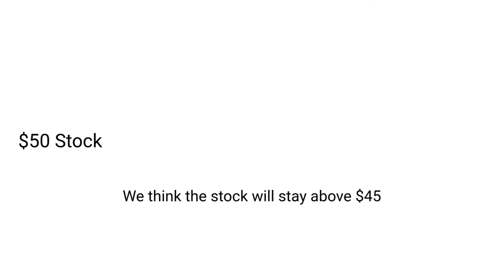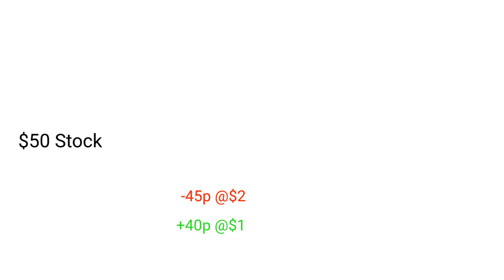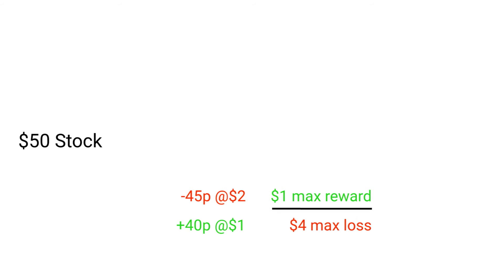Let's walk through an example. Here we have a stock trading for $50 per share. Based on our analysis, this stock is likely to stay above $45 for the next 30 days. So let's build a bull put spread that says we'll profit if the stock stays above $45. In this hypothetical example, let's say we get a $1 credit on this $5 vertical spread. That means the most we could lose on this trade is $4 — a 25% return on our risk, and all we need is for the stock to stay over $45.